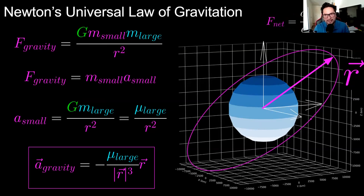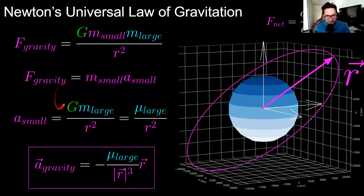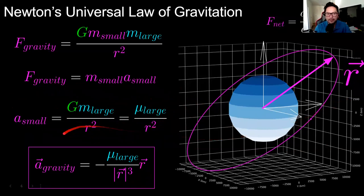Setting the two equations equal, the mass of the small object cancels out, leaving the most fundamental equation in orbital mechanics: the acceleration equals G times the mass of the large body divided by r². Since G and the mass of Earth are relatively constant, we group them into a mu (μ) value for any central body, giving us the succinct form: acceleration = μ/r².